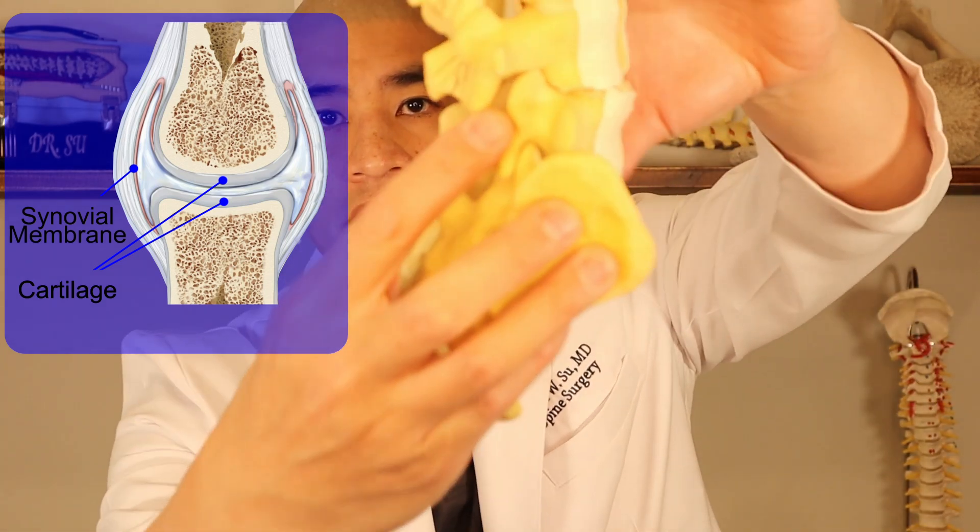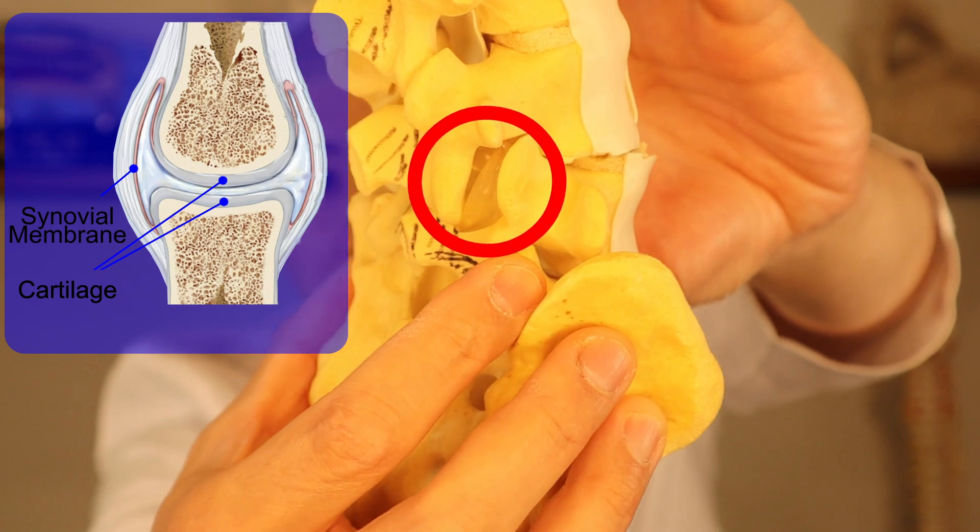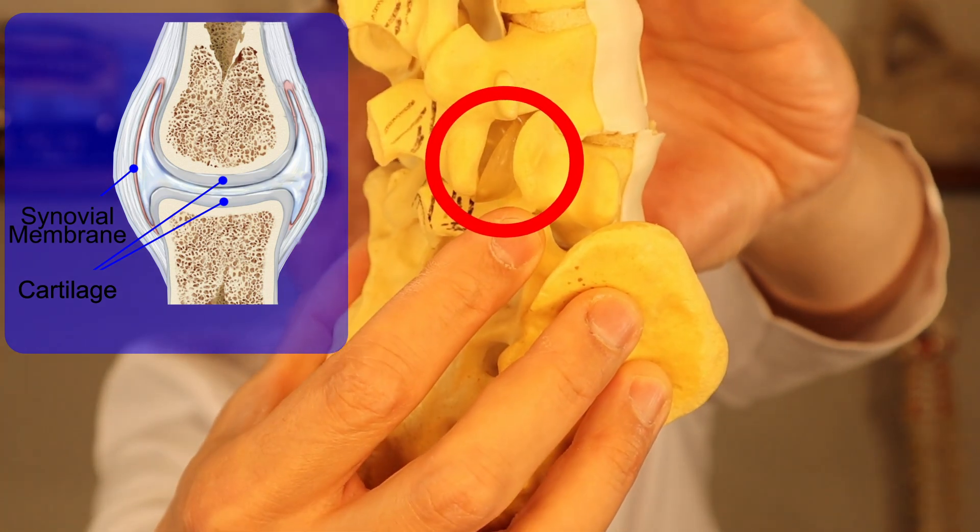Next there's cartilage. Cartilage covers the bone and allows it to have a slick, Teflon-like surface so the joint glides easily. And then you have the synovial membrane — a little lining inside the capsule whose function is to make synovial fluid. I've made a model here of what the synovial membrane might look like: there's the facet joint, and there's a little membrane inside that cushions the bones together with synovial fluid. The joint cavity contains the synovial fluid, which is a thick, oily substance that allows the bone to move smoothly along the cartilage.